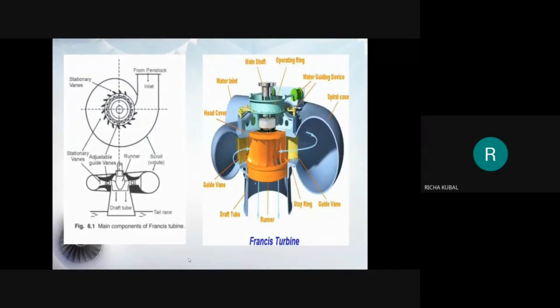The figure shows the construction of Francis turbine and its components. The main components of Francis turbine are scroll casing, guide vanes which is also known as wicket gates, runner and runner bed, and draft tube. Further, we will discuss the parts in detail.